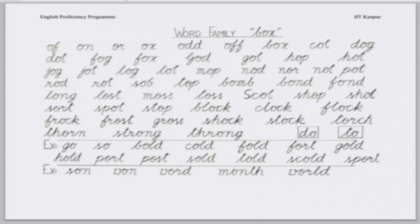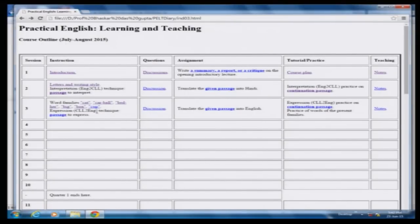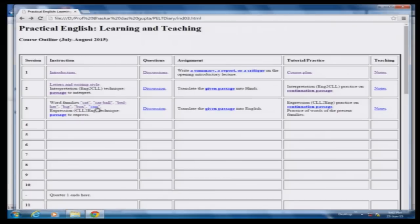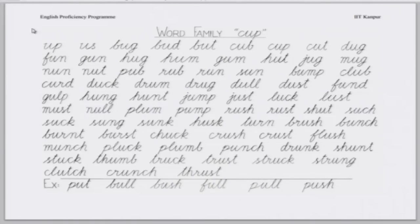We continue with the remaining vowel — U. Mohita. Up, us, bug, bud, butt, cub, cup, cut, dug, fun, gun, hug, hum, gum, hut, jug, mug.